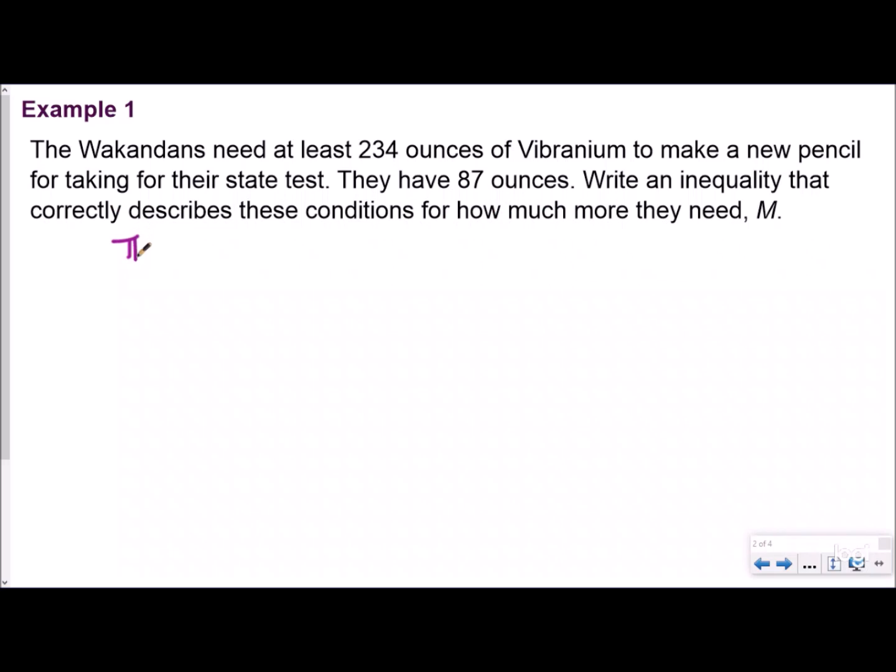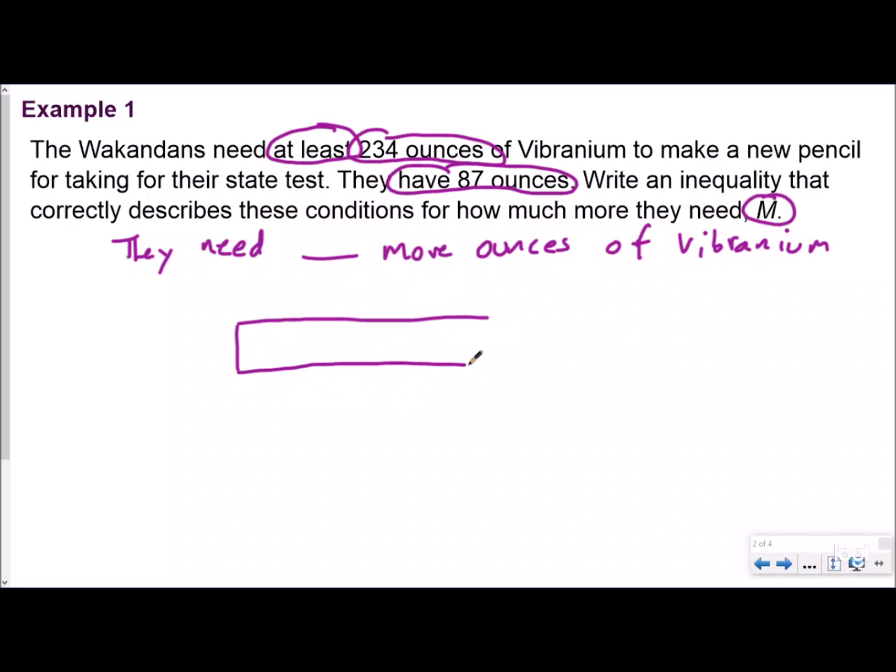Our statement's gonna say they need blank more ounces of vibranium. We're looking for anything about ounces or vibranium. They need at least, that's very important, at least 234 ounces of vibranium to make a new pencil. They have 87 ounces and we want to write the inequality for how much more do they need. So we're focused on how to use tape diagrams to help us figure this out. I know I'm looking for how much more I need, so it's going to be a part-whole model. I'm going to go ahead and draw that.